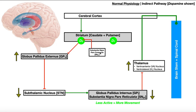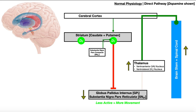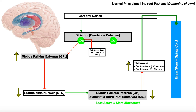Now let's add dopamine and the substantia nigra pars compacta to the indirect pathway. Regardless of which pathway, dopamine is pro-movement — it modulates the amount of movement by slightly increasing it in both cases. Because the indirect pathway normally suppresses unwanted movement, in some cases we don't want it totally suppressed — we want to modulate it. Dopamine allows us to avoid complete inhibition and get maybe just mostly inhibition. For the indirect pathway, dopamine binds to D2 receptors, which has an inhibitory effect on the striatum.